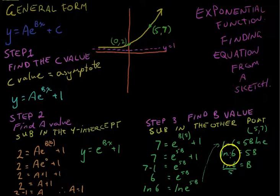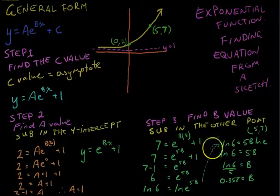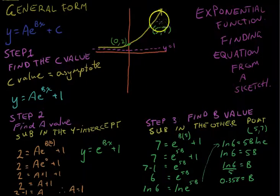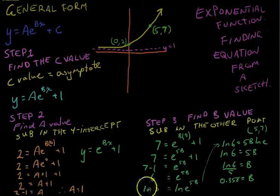Now we can type that into our calculator and get an answer, which gives me a B value of 0.358. So we've really finished here. We found a C value by looking at the asymptote. We found the A value by subbing in the y-intercept and solving for A. And we found the B value by subbing in the significant point, doing some fancy work here with the natural log.